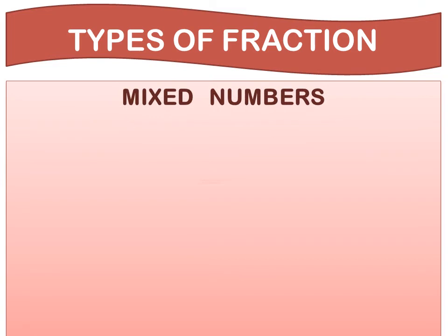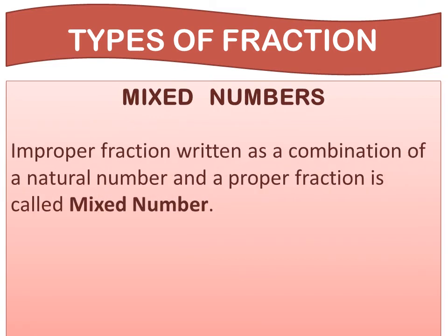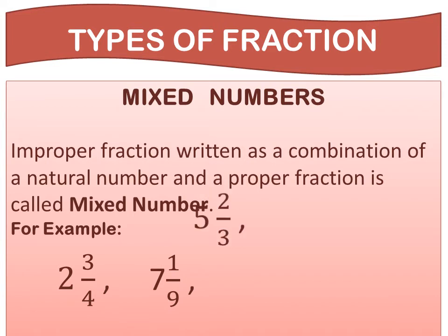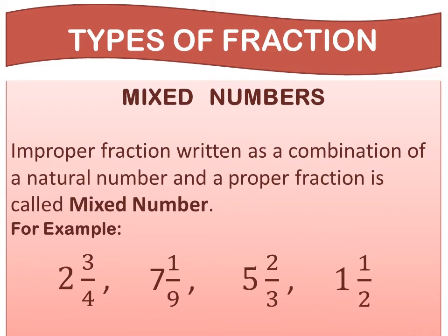The next is mixed numbers. An improper fraction written as a combination of a natural number and a proper fraction is called a mixed number. For example, 2 and 3 upon 4 — here 2 is a natural number and 3 upon 4 is a proper fraction. Other examples include 7 and 1 upon 9, 5 and 2 upon 3, and 1 and 1 upon 2.